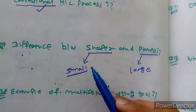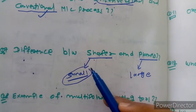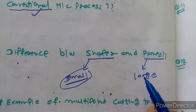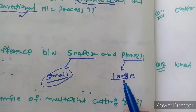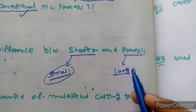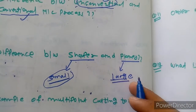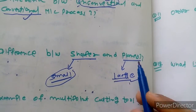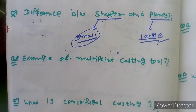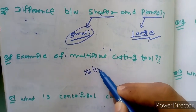The difference between shaper and planer: the concept is similar. When the work piece is small, we use a shaper — the work piece is fixed and the tool is moving. In a planer, when the work piece is large, you cannot move the tool over it because it would require a very high stroke length, so the tool is held at one place and the large work piece moves. In shaper: tool moves, work piece fixed. In planer: work piece moves, tool fixed.